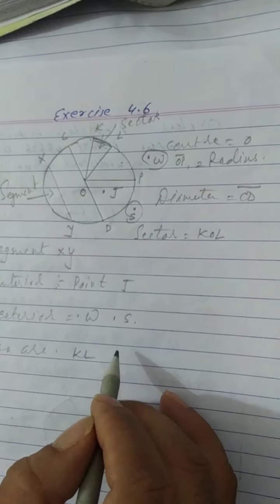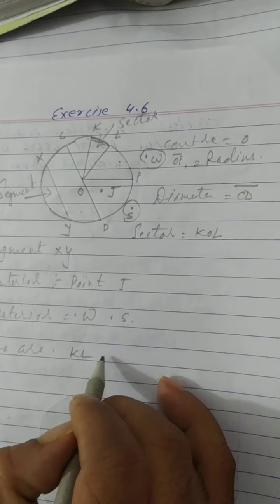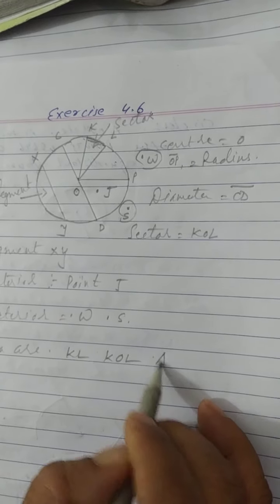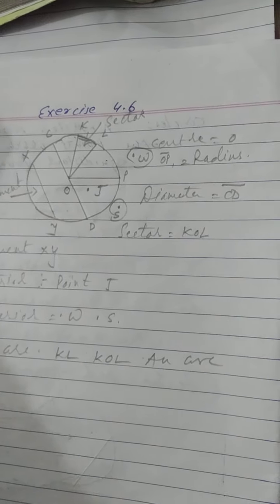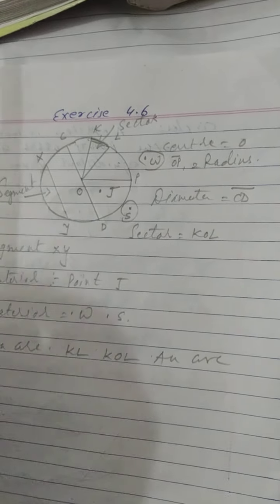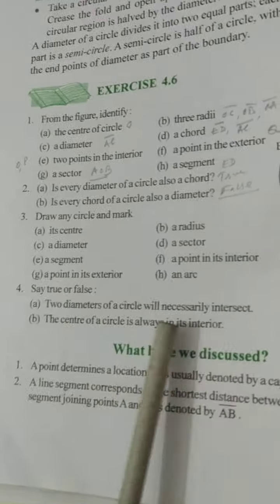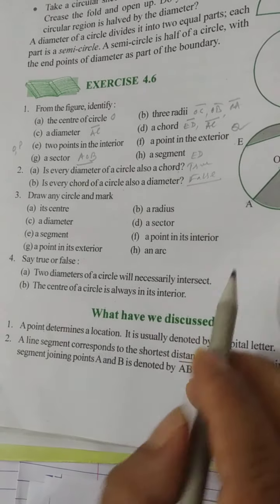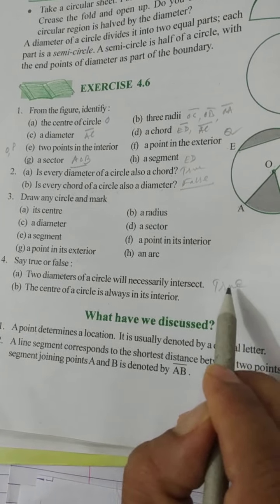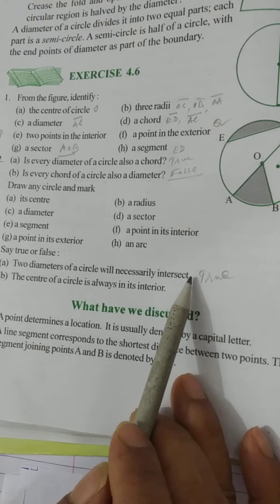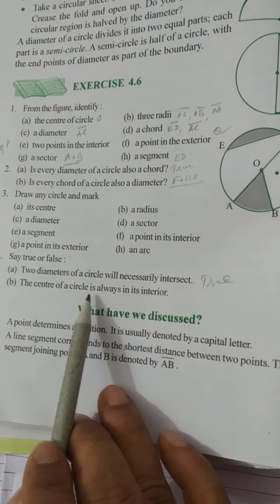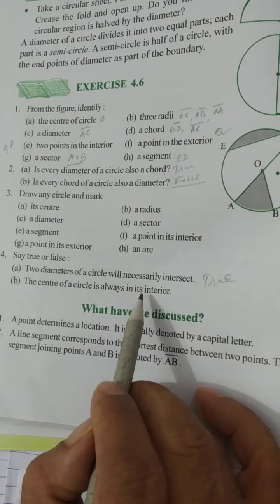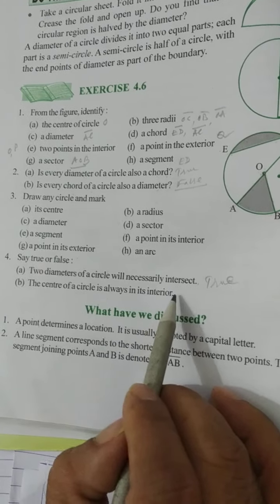Now fourth: say true or false. Two diameters of a circle will necessarily intersect — yes, definitely they intersect because both pass through the center, so they intersect at the center. True. Second: the center of a circle is always in its interior — the center is always lying inside the circle, so it is also true.